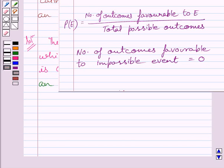Now substituting this value zero in this expression, we get probability of an event E is equal to zero upon total possible outcomes. That is further equal to zero only.